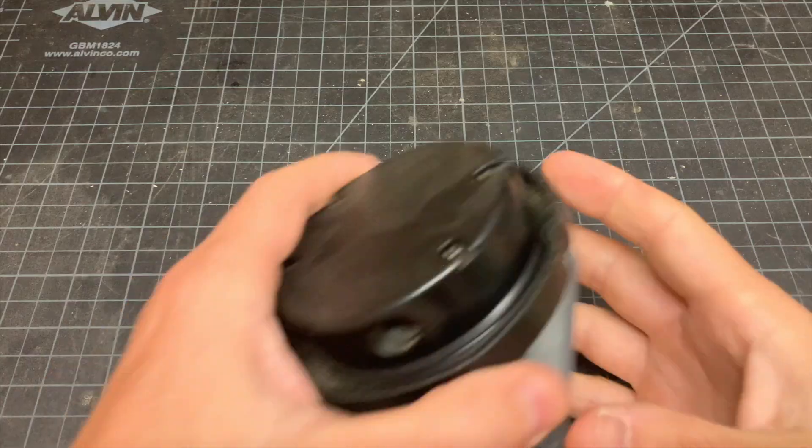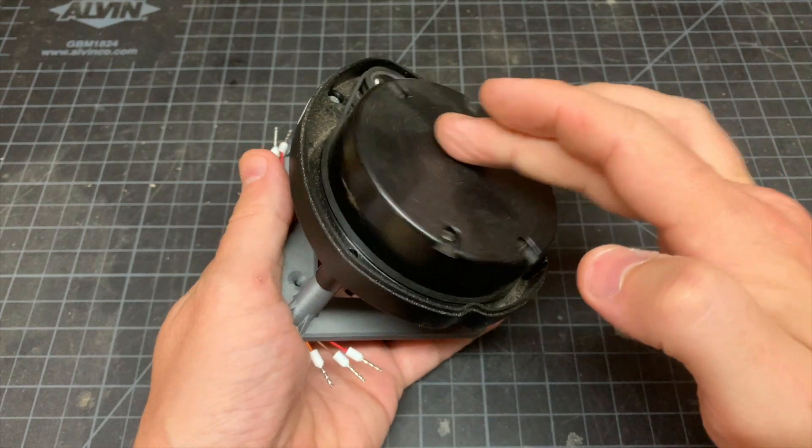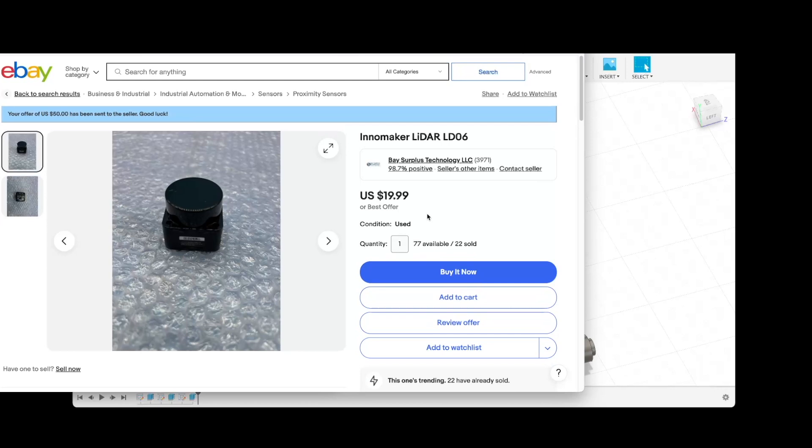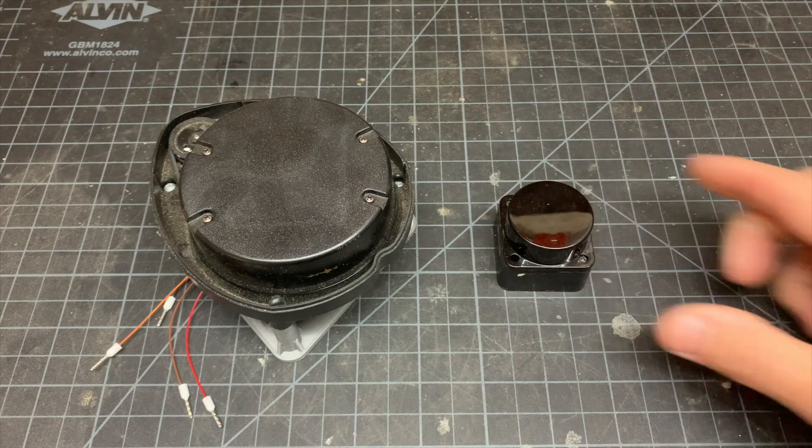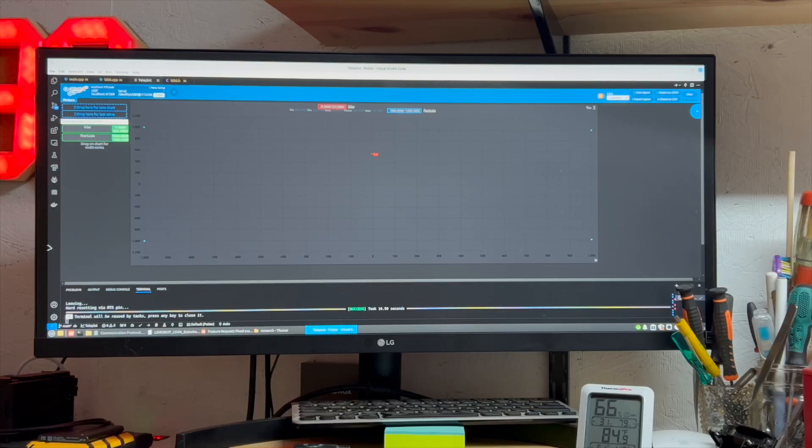I originally planned on using a lidar that I took out of an old robot vacuum that I bought at thrift store years ago, but when I saw these newer ones on ebay, I couldn't help myself. I ended up ordering 4 of them for like 50 bucks. Plus, look at the size difference. Okay, let's wire up the lidar to a microcontroller and start reading the data. You can see the Advil bottle moving in the lidar data as I move it back and forth.